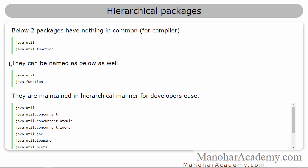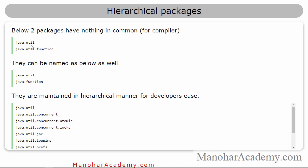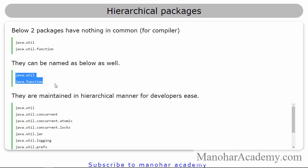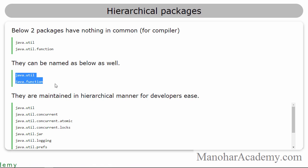I mentioned about two packages in the previous lesson: java.util and java.util.function. These are called hierarchical packages because of the way they are organized. But they have nothing in common for the compiler. As far as the compiler is concerned, whether they have names like java.util or java.util.function, it doesn't matter — in the compiler's perspective, they are completely different classes.